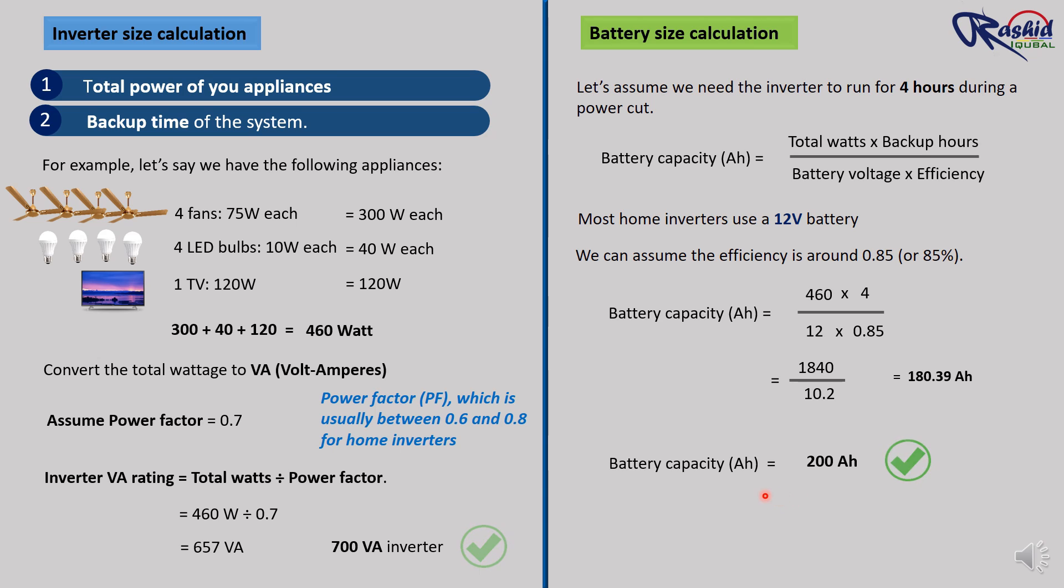For this example we choose a 700 VA inverter and a 200 Ah battery to power 460 watts of appliances for 4 hours.